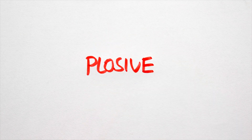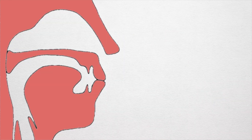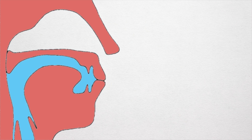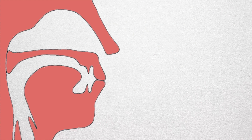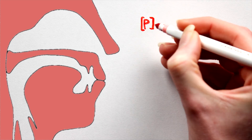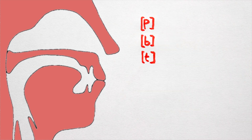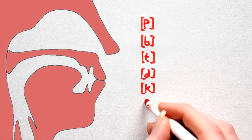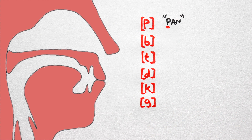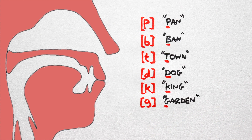Number 2: Plosives, also known as stops, stop the airflow entirely. The pressure is built up behind the articulators and eventually released in a small explosion of air. English has 6 plosive consonants: 'ba', 'pa', 'ta', 'da', 'ka', and 'ga', as in pan, ban, town, dog, king, and garden.